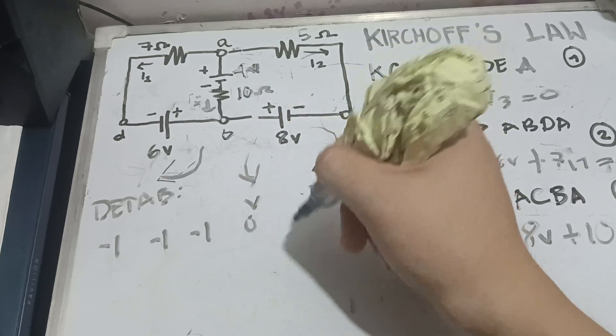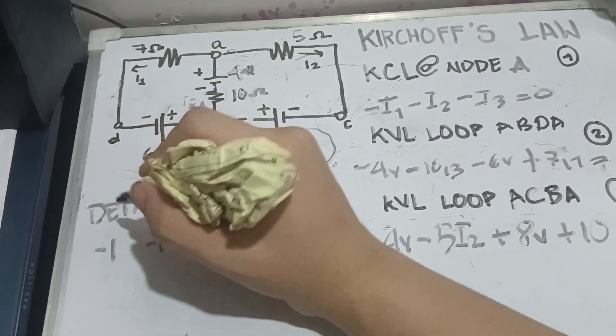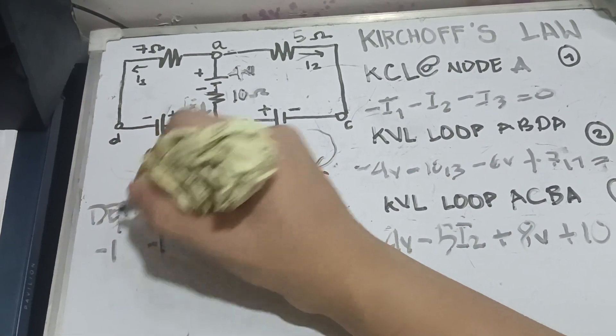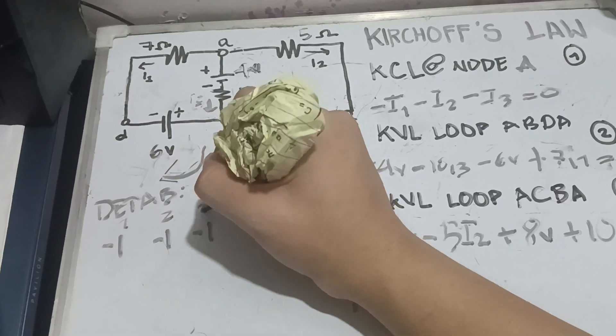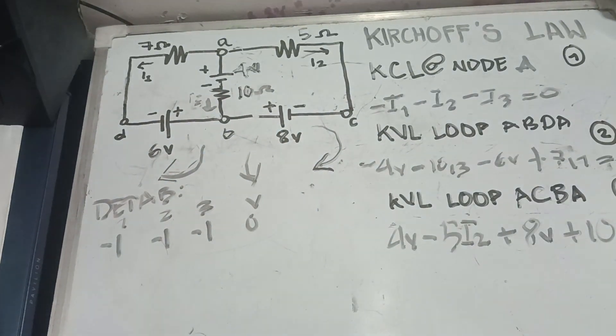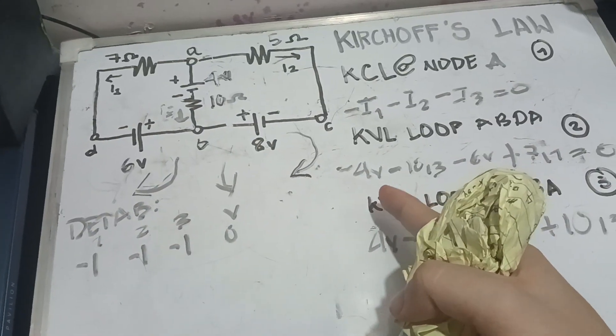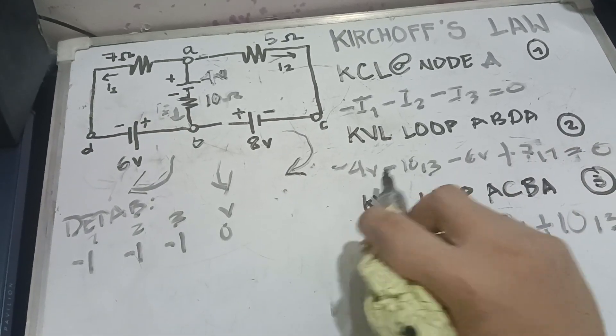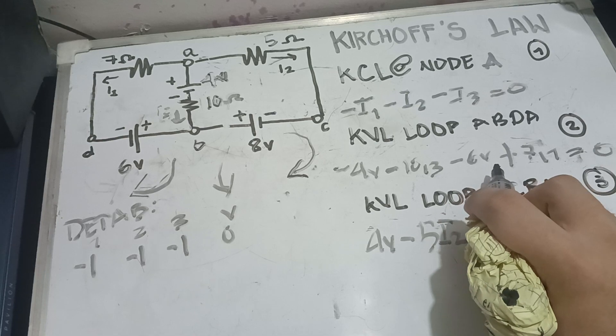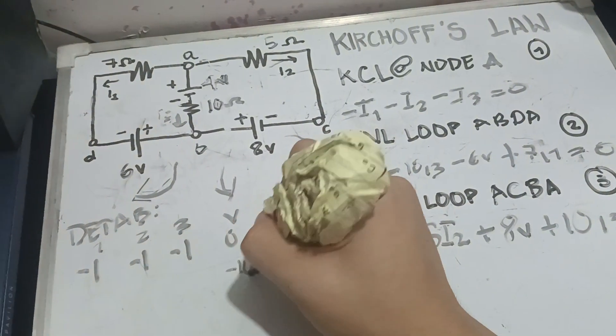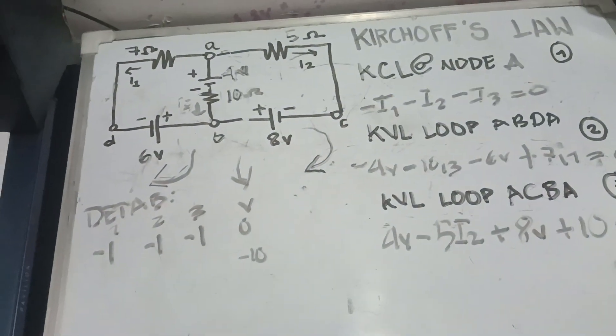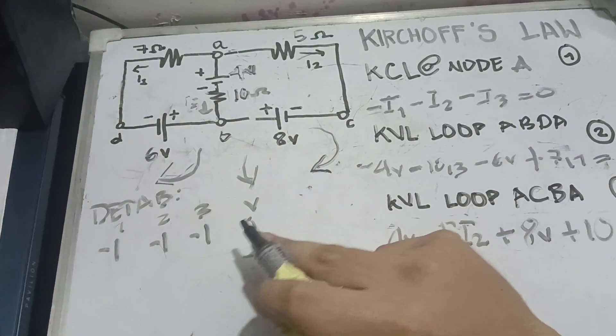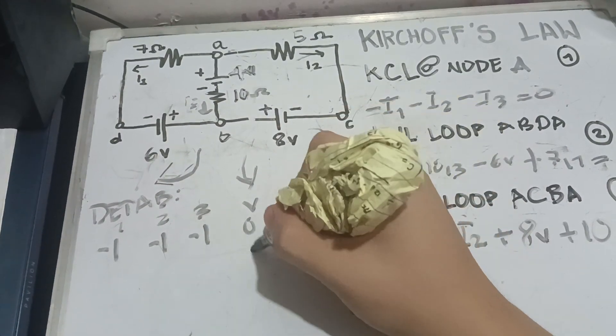So, this is the voltage. All this one is the I1 column, the I2 column, and the I3 column. Next one, negative 4 volts. We must combine first our voltage. Negative 4 volts plus negative 6 volts is equal to negative 10 volts. But, we have a rule that we must transpose the value. So, it's going to be just 10.